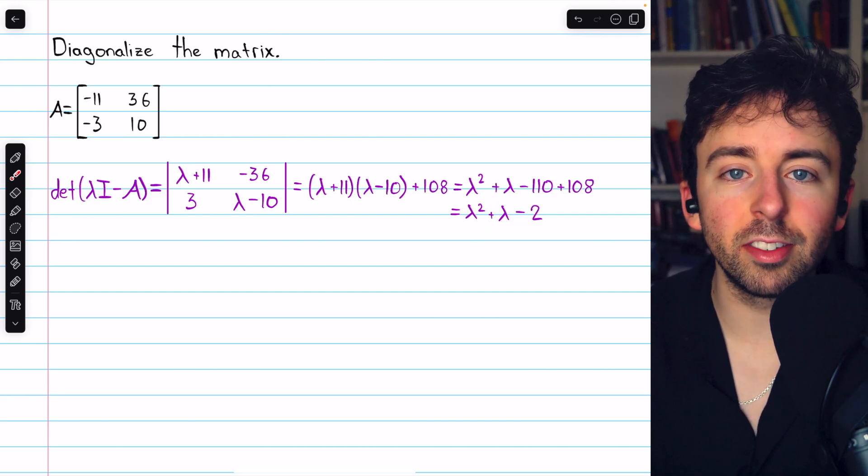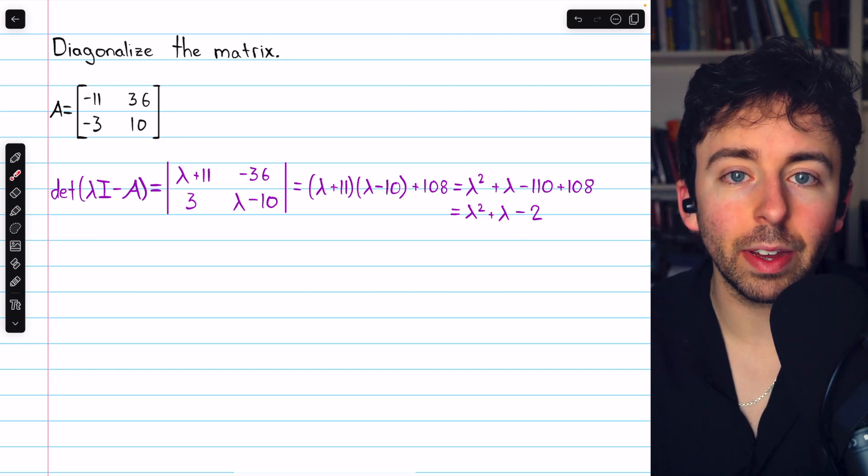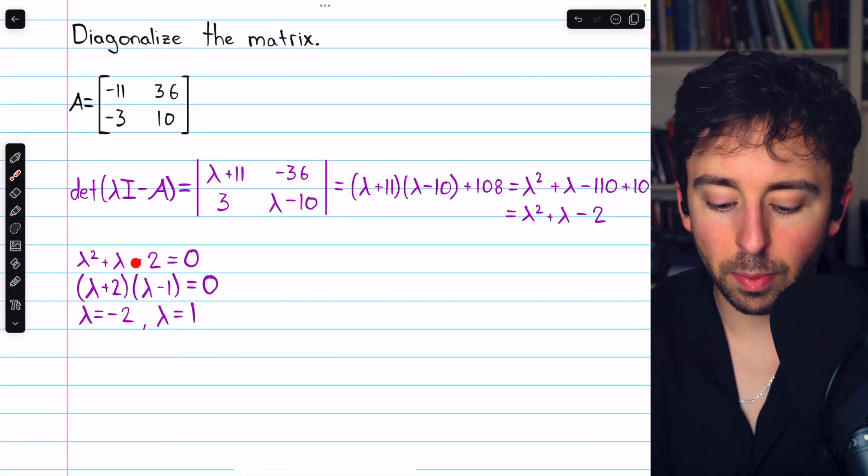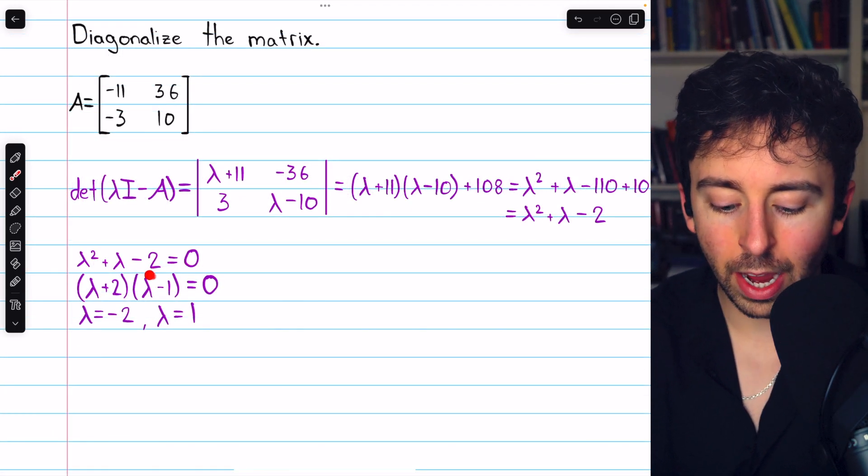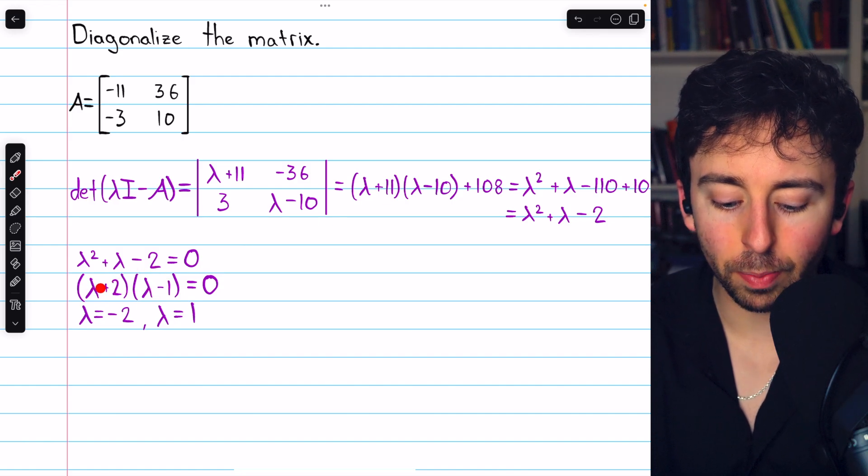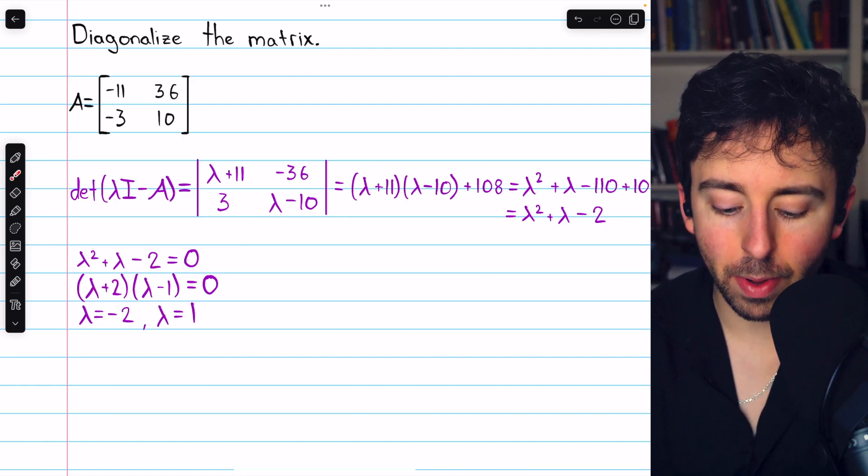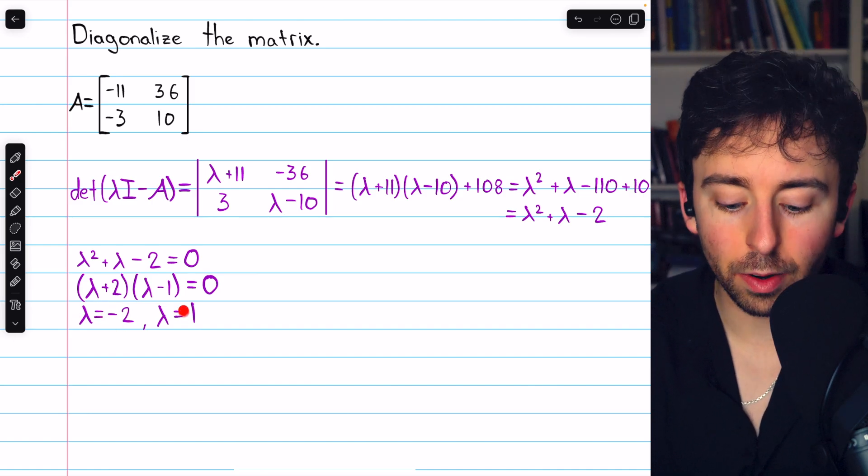By setting it equal to 0 and solving, we find the eigenvalues. So λ² + λ - 2 we set equal to 0, and we can factor it as (λ+2)(λ-1). Hence, the two eigenvalues are -2 and 1.